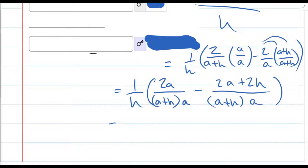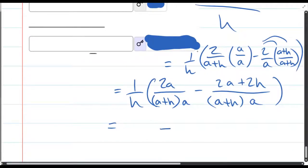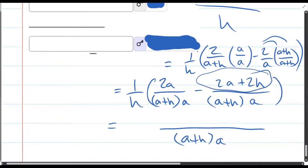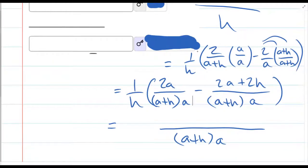Now, we have common denominator, so we're ready to combine this into one fraction. We're subtracting this whole quantity, which means we're subtracting two a, and we're subtracting two h.